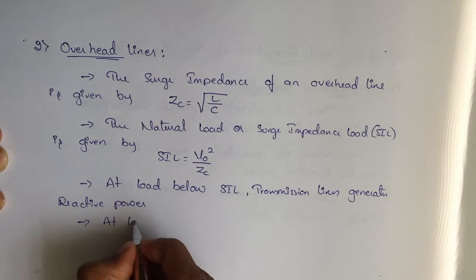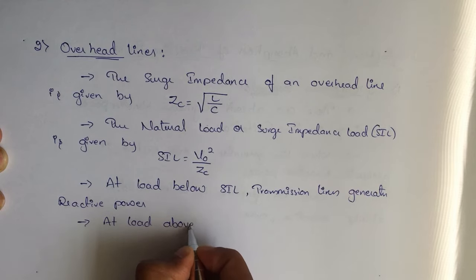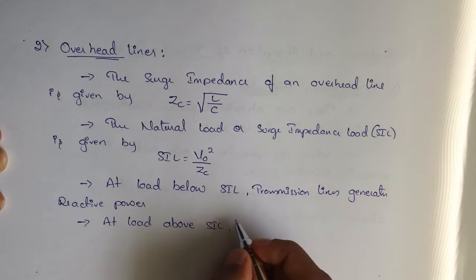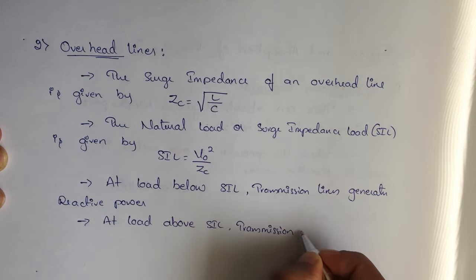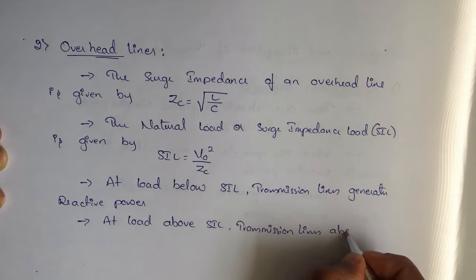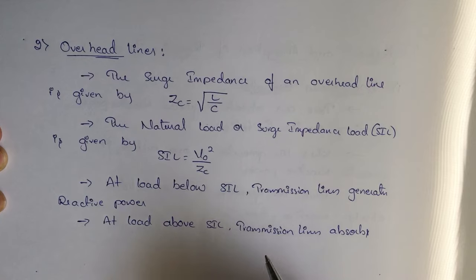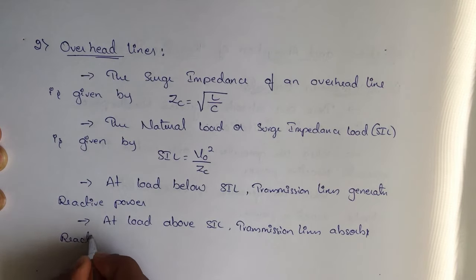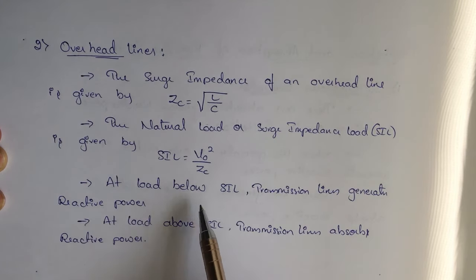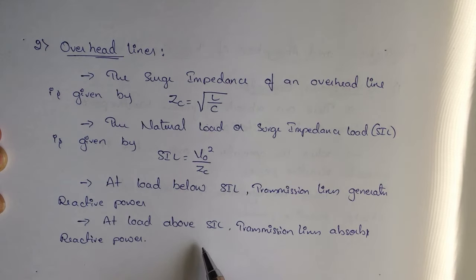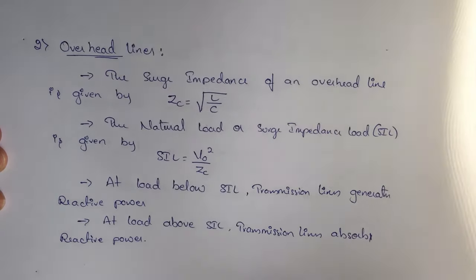If the load is below SIL, the transmission line generates reactive power. If the load is above SIL, it absorbs reactive power. So the overhead line acts both as an absorber and as a generator of reactive power.